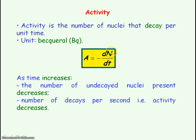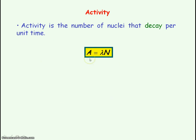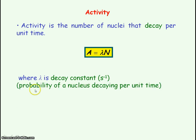So as time increases, dN and activity both decrease. Activity is also found by lambda N, where lambda is known as the decay constant, which has units of per second, and it represents the probability of a nucleus decaying per unit time. And N is the number of undecayed radioactive nuclei that are present.